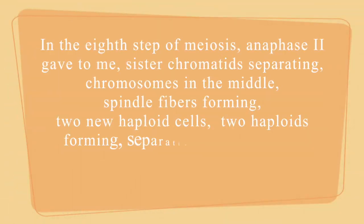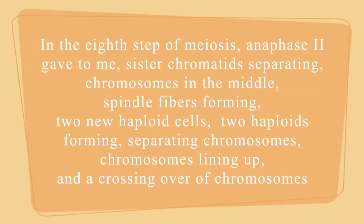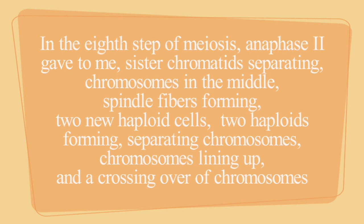In the eighth step of meiosis, where the phase 2 gave to me, chromosomes in the middle, spindle forming, two new haploid cells. Two haploids forming, separating chromosomes, chromosomes lining up, and a crossing over of chromosomes.